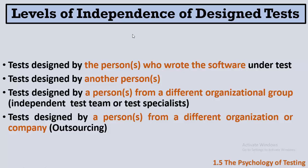We talked about independence — so what are the levels of independence a tester can have? The first and lowest level is that the developer who wrote the code is the one who tests it. The second level is having another person in the same team who tests the software — for example, a team of five where four are developers and one is a tester. The third level is that tests are designed by a person or persons from a different organizational group, such as a separate development team and a separate test team that do not interact directly.